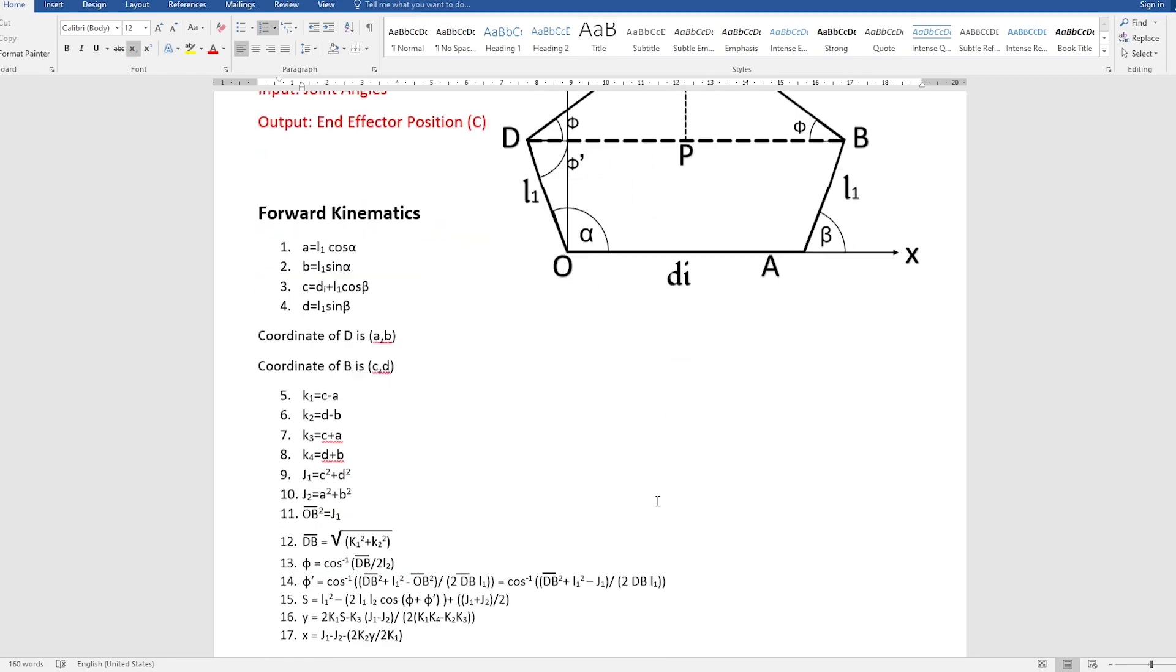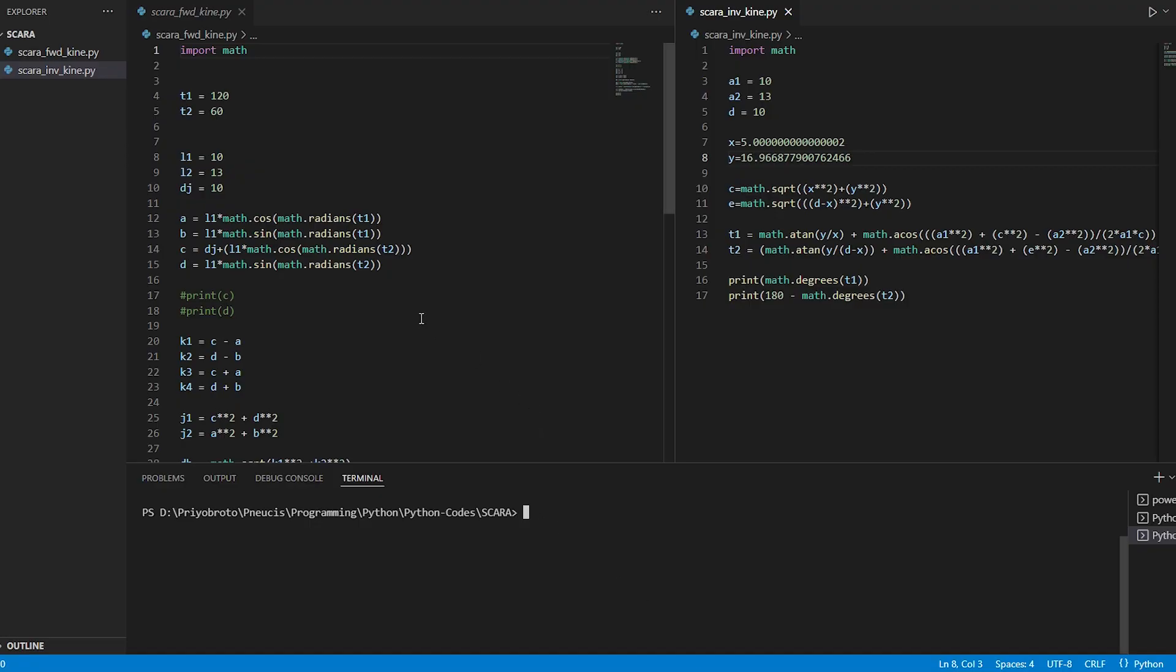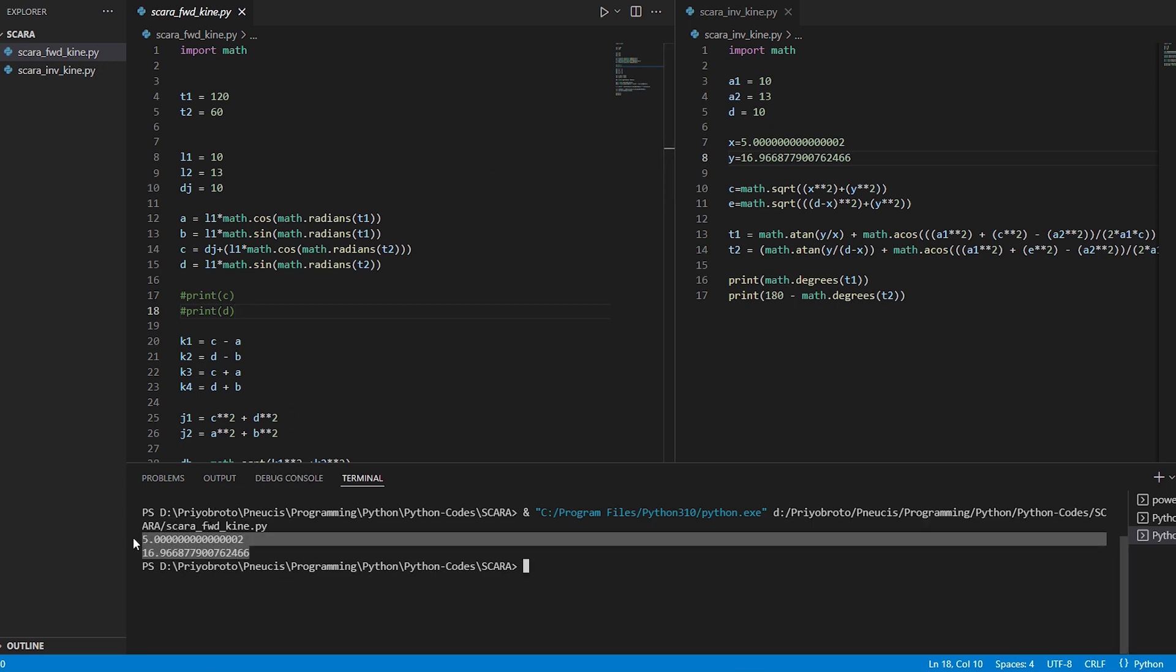So for easy calculation I have programmed it in Python programming. As you can see, I have opened side by side SCARA forward kinematics and SCARA inverse kinematics. So first I will test the forward kinematics. I am giving the servo angles as 120 degree and 60 degree. It means alpha is 120 degree and beta is 60 degree. So if I run this, I can get these results. This is the x position, 5 centimeters, and 16.9 is the y position. Now if I give these two values in the inverse kinematics, I should get the angles which I have given in the forward kinematics, which is 120 and 60.